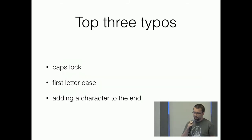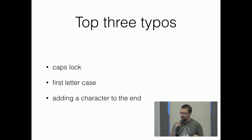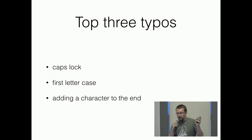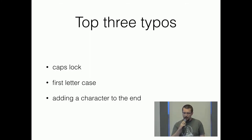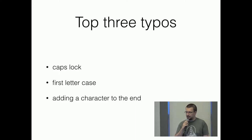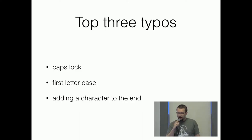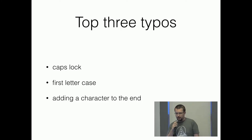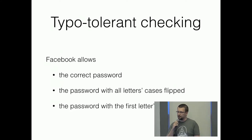The first top typo is caps lock — when you are typing something with caps lock turned on, resulting in the wrong password. The second is the first letter being flipped — it should be lowercase but is uppercase, or the other way around. The third and most popular is adding a character at the end — you are typing something and at the end there is an additional character.